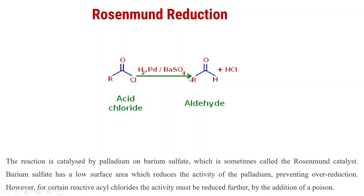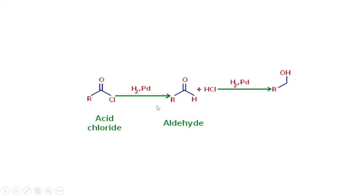If we do not take BaSO4 here, what will be the product? If we do not take BaSO4, first this acid chloride is converted into the aldehyde with HCl removal and one H attached. Then again H2/Pd converts RCHO — H2 comes, one H comes here and HCl is eliminated. Then finally the product is RCOH, meaning alcohol. If we do not take BaSO4, the reaction stops at the stage of alcohol.